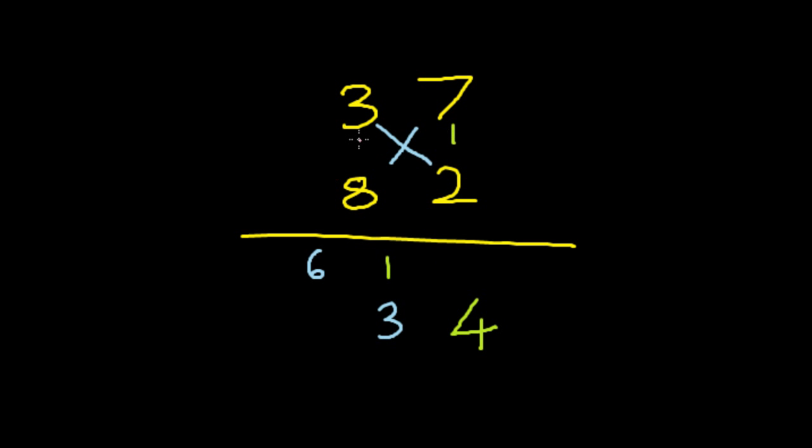Next, we multiply the left hand digits. 8 times 3 is 24. 24 plus 6 is 30. So this is the answer.